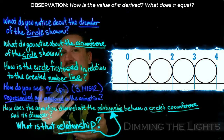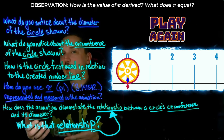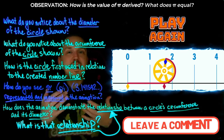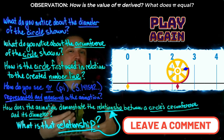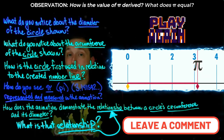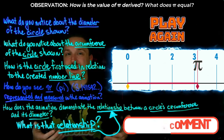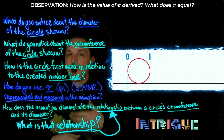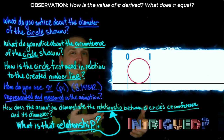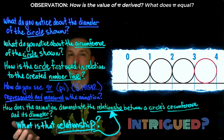As you observe, I encourage you to watch this animation multiple times, note your observations, and share them down in the comments. Each viewing can reveal new insights, and reading what others have noticed and are wondering about is a great way to extend your learning. Are you intrigued to know more about this mysterious relationship between the diameter and circumference of a circle? And what has pi got to do with all this?